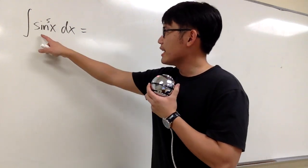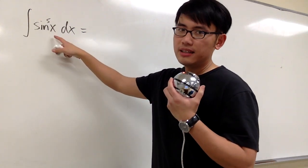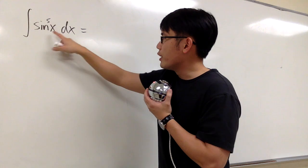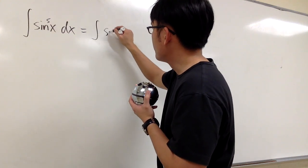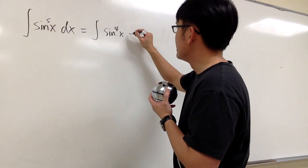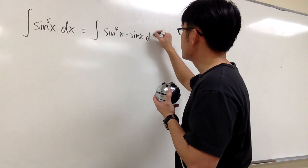We will integrate sin to the 5th power x. Luckily, this is an odd power, so we can break this apart as the integral sin to the 4th power x times sin x dx.